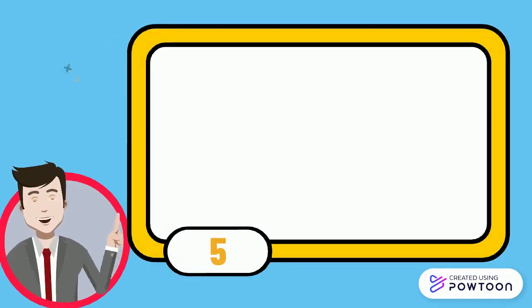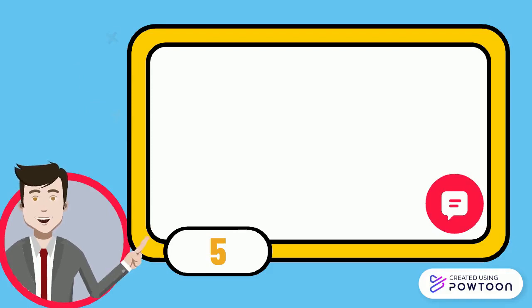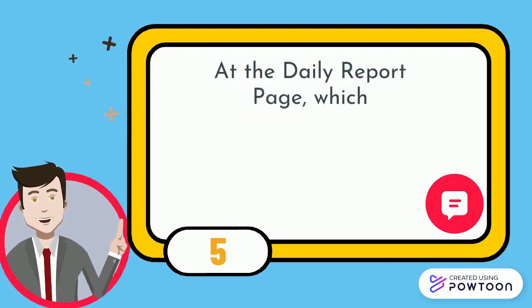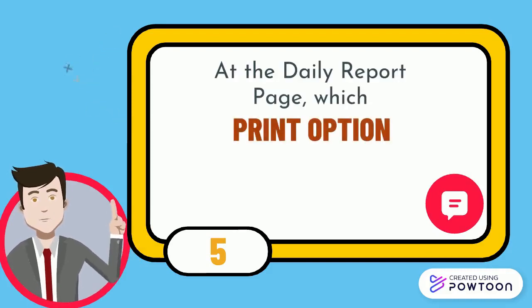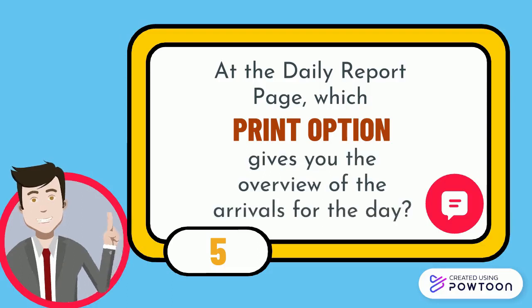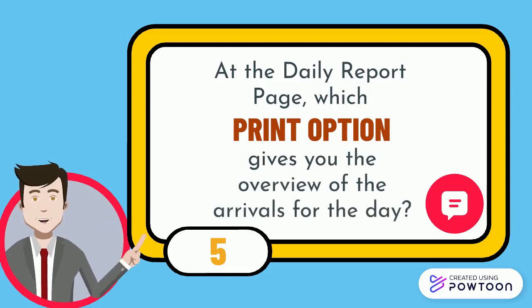For the last question: at the daily report page, which print option gives you the overview of the arrivals for today?